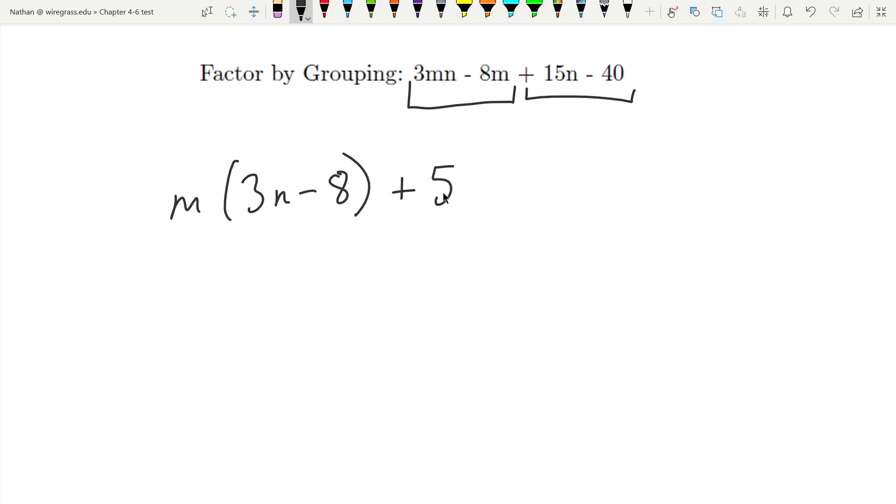So plus 5, divide this by 5 I get 3n, and divide this by 5 I get negative 8. And you can see those are the same, which is what we want. I can now factor that out of each one because that's the greatest common factor, this 3n minus 8.